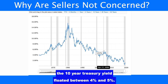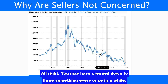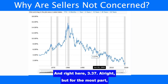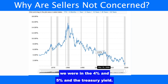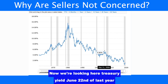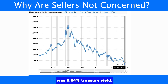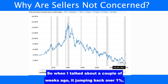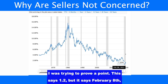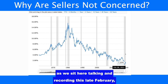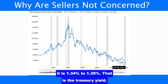But let's talk about the early 2000s. The 10-year treasury yield floated between 4% and 5%. You may have creeped down to 3-something every once in a while — right here, 3.37. But for the most part we were in the 4s and 5s in the treasury yield. Now, looking here, the treasury yield on June 22nd of last year was 0.64%, and August 17th of last year was also 0.64%. As we sit here recording this in late February, it is 1.34 to 1.38 — that is the treasury yield.